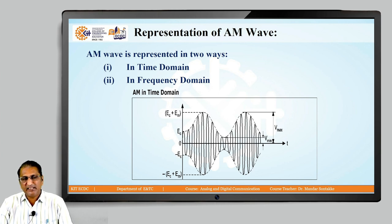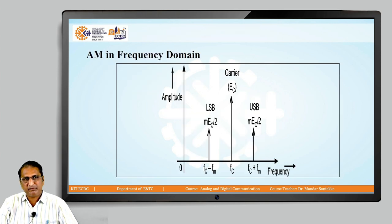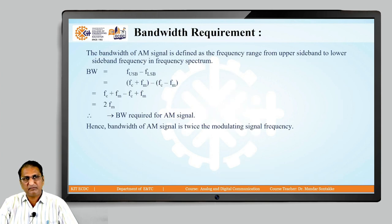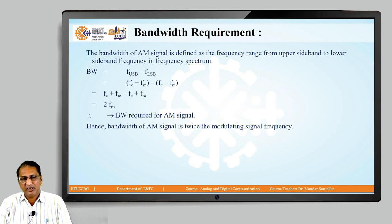In the time domain, the x-axis is time and the y-axis is amplitude. The upper envelope has a maximum amplitude of E_c + E_m, and the lower envelope has a maximum amplitude of E_c − E_m. In the frequency domain, the right-hand side is F_c + F_m and the left-hand side is F_c − F_m. The bandwidth is the upper sideband minus the lower sideband, which equals twice F_m.